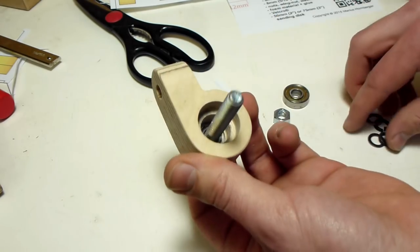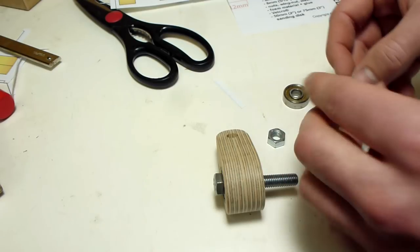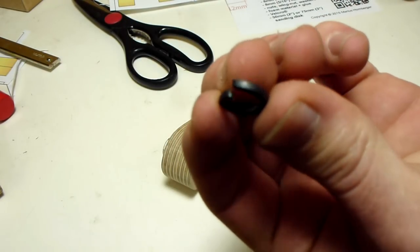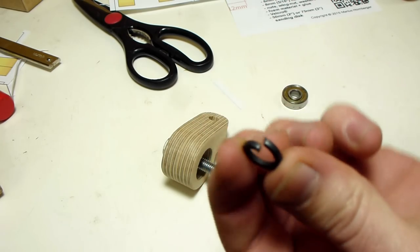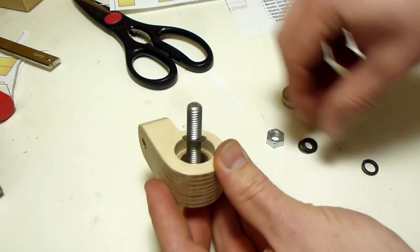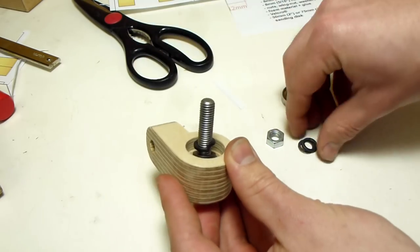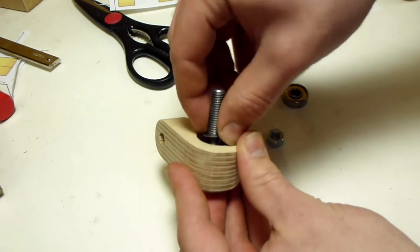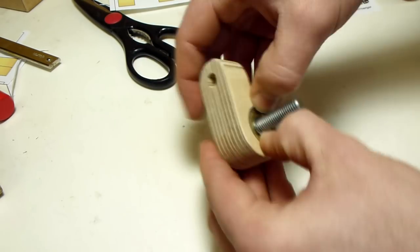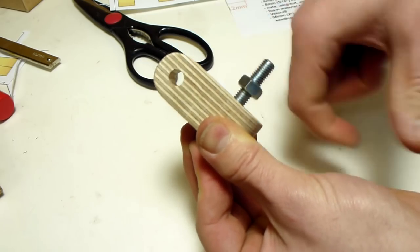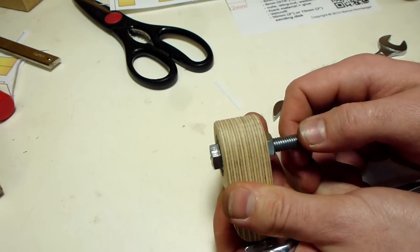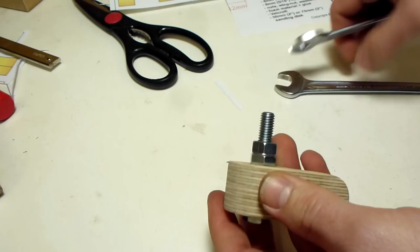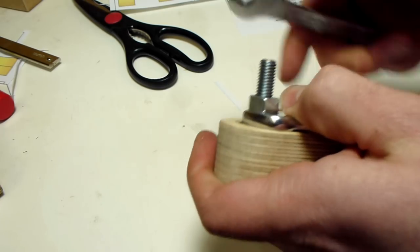So you need to somehow have a spacer in there. You could use just washers. I found what works best are these split washers. So my spacing is a washer, then two of the split washers, and another normal washer, and then the other bearing. And then you can lock this together. You tighten it up until it doesn't wiggle back and forth anymore. And the second nut gets locked into the first nut.